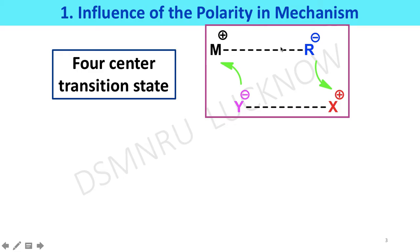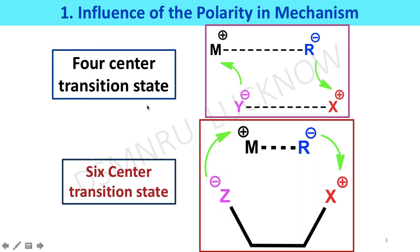Due to some difference between the electronegativity of the metal and the carbon atom attached to it, there is a slightly positive charge achieved by the metal and the carbon atom achieves a negative charge. During reaction mechanism, polarity plays a role in formation of transition state via four-centred or six-centred transition states, in which incoming reactants also achieve positive and negative charge. The positive end of the reactant is attacked by the carbanion of the organometallic reagent, and the negative end attacks the metal ion. In this way, a new product is formed.